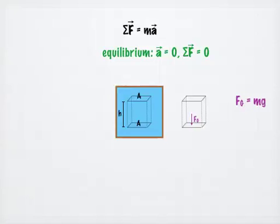On the top surface of the column of fluid, a force acts downward on the column due to the pressure from the fluid above the column. We will call this force F sub P1.